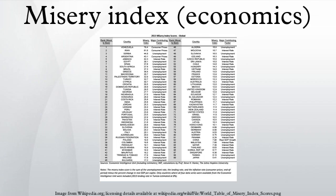Some economists posit that the components of the misery index drive the crime rate to a degree. Using data from 1960 to 2005, they have found that the misery index and the crime rate correlate strongly, and that the misery index seems to lead the crime rate by a year or so. In fact, the correlation is so strong that the two can be said to be co-integrated, and stronger than correlation with either the unemployment rate or inflation rate alone.